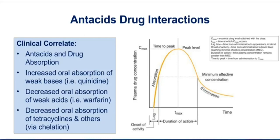If you take an antacid and a weak base drug at the same time, with a higher pH in the stomach the weak base is more likely to be non-ionized, so its absorption rate is going to be increased — the slope on the left being even steeper, meaning you reach the MEC even faster, which shortens the onset of activity. On the other hand, if you take an antacid and a weak acid drug at the same time, with a higher pH the weak acid is more likely to move into its ionized state, so its absorption is going to be slowed, the slope will be depressed, it'll take longer to reach the MEC, and your onset of activity will be increased.